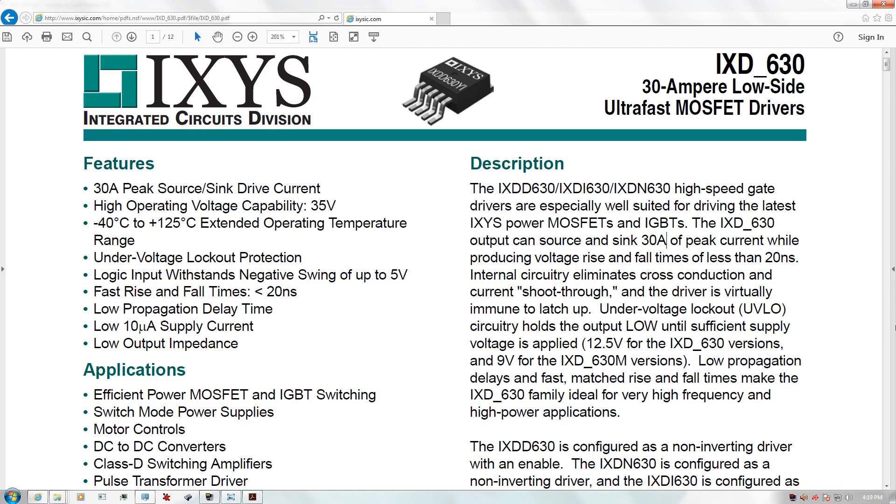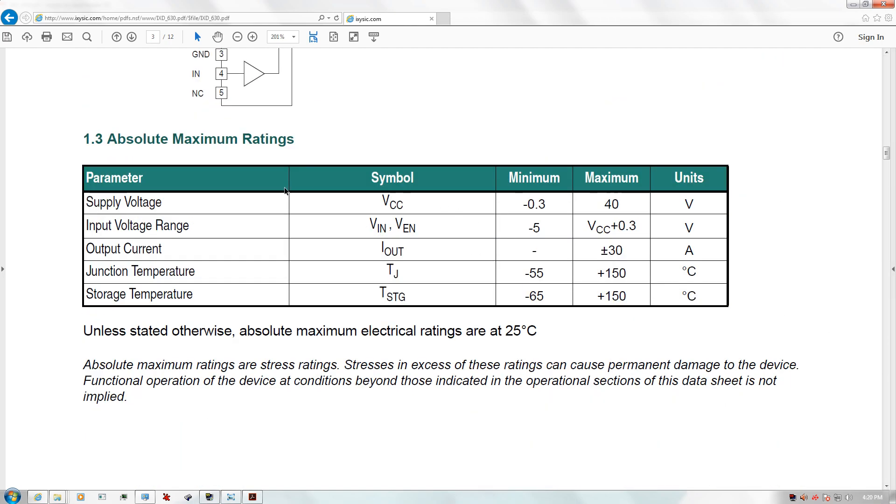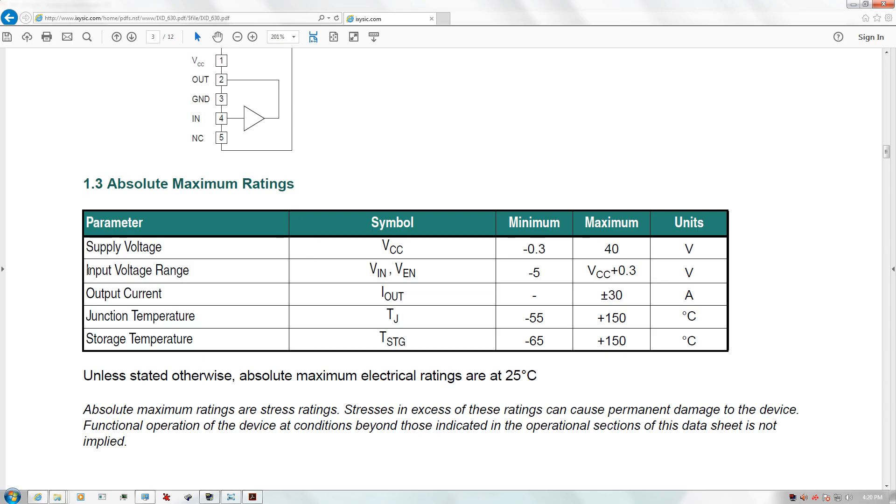The issue with the iXDN630 is that it's not isolated. We'll have to use an input isolator first, unless your application doesn't require isolation. Now just a few things to note about the iXDN630. The input voltage range, I want you to note, this is for the signal input, this is not the power input. We can swing it to minus 5 volts to 3 volts above VCC. Now the maximum input voltage rating for this is 35 volts. Ideally, I would recommend anywhere between minus 5 volts and positive 17 volts going into the signal input.